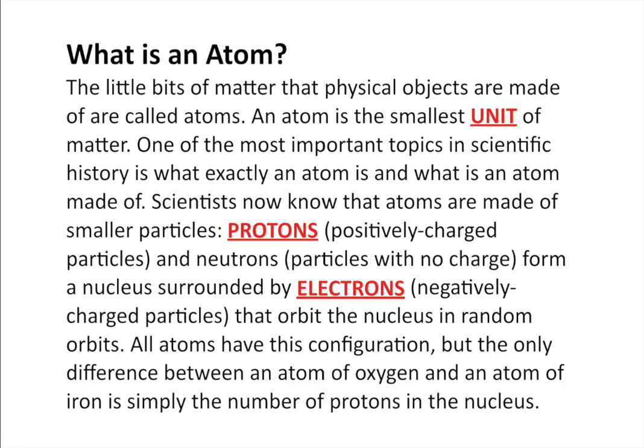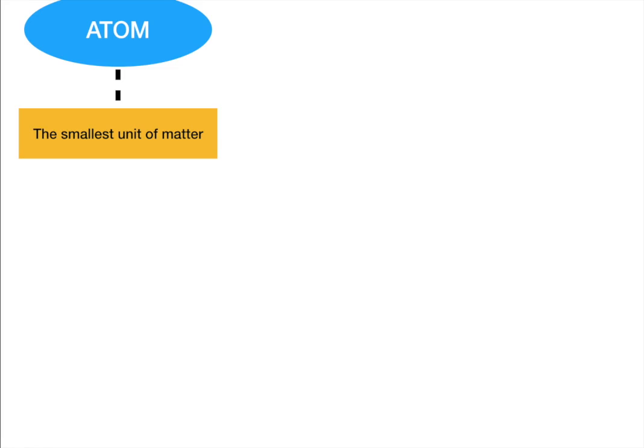Protons and neutrons are stuck together in the center of the atom known as the nucleus. The nucleus is surrounded by a cloud of electrons. Electrons are negatively charged particles with an erratic orbit — it's hard to figure out where exactly an electron is at any given time, so we call it a cloud. No matter what kind of atom — plutonium, iridium, neon, argon, iron, oxygen, carbon, or hydrogen — all atoms in the universe have this configuration. The only difference between an atom of oxygen and iron is the number of protons in the nucleus.